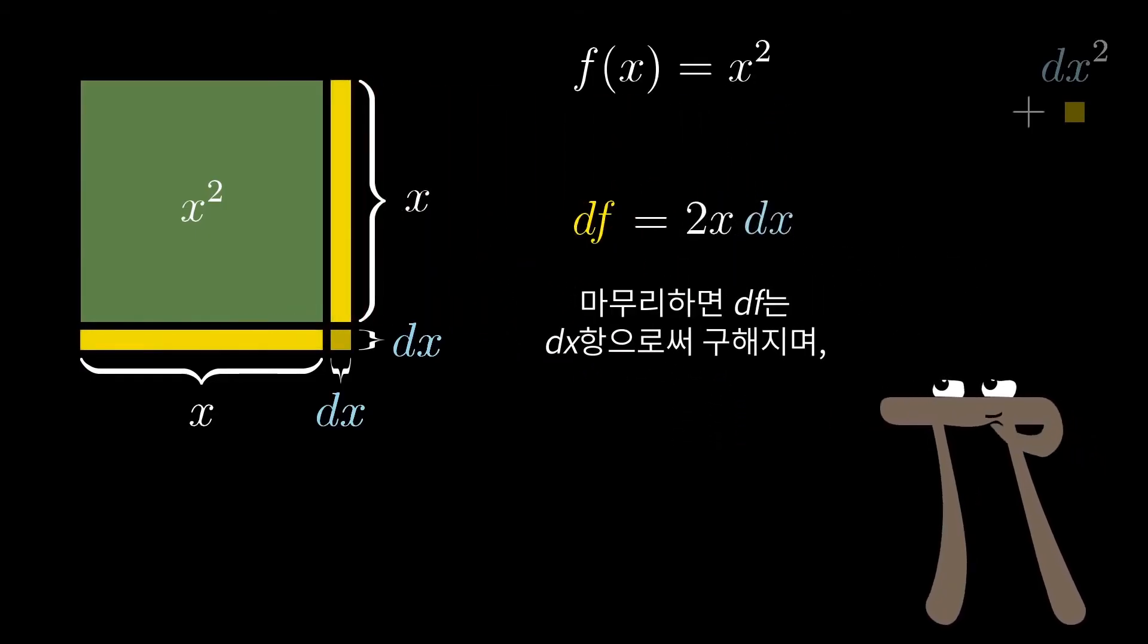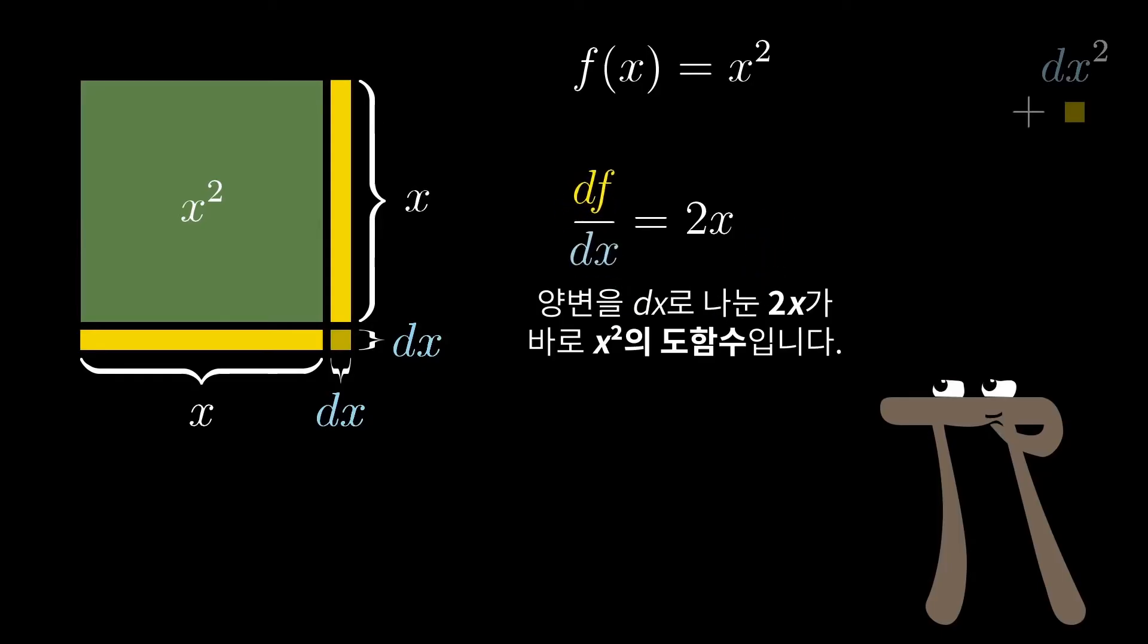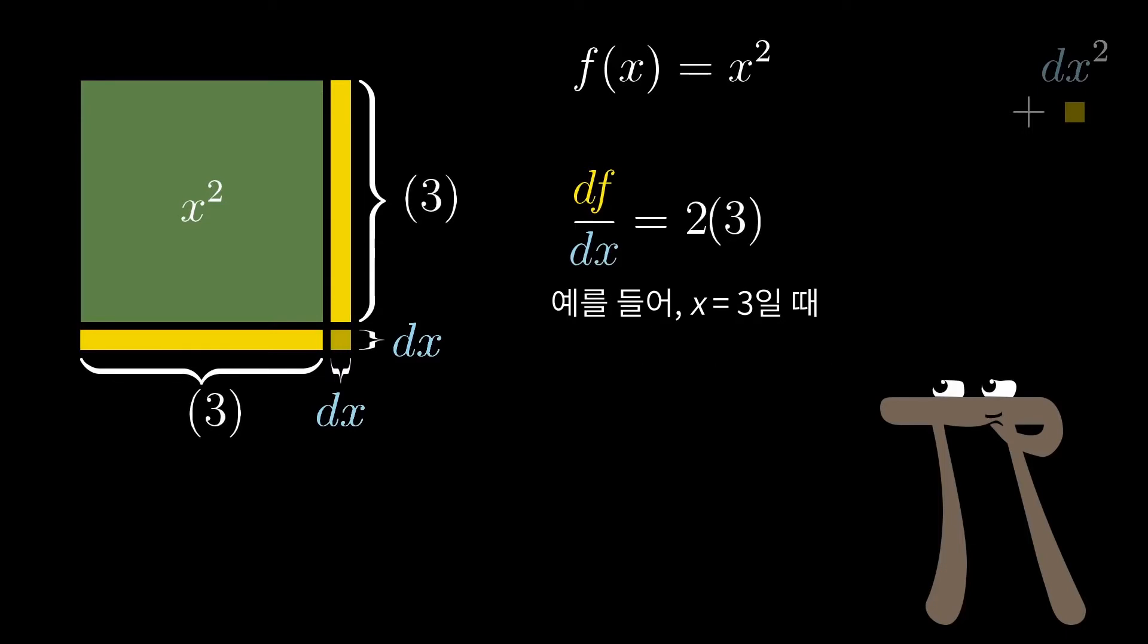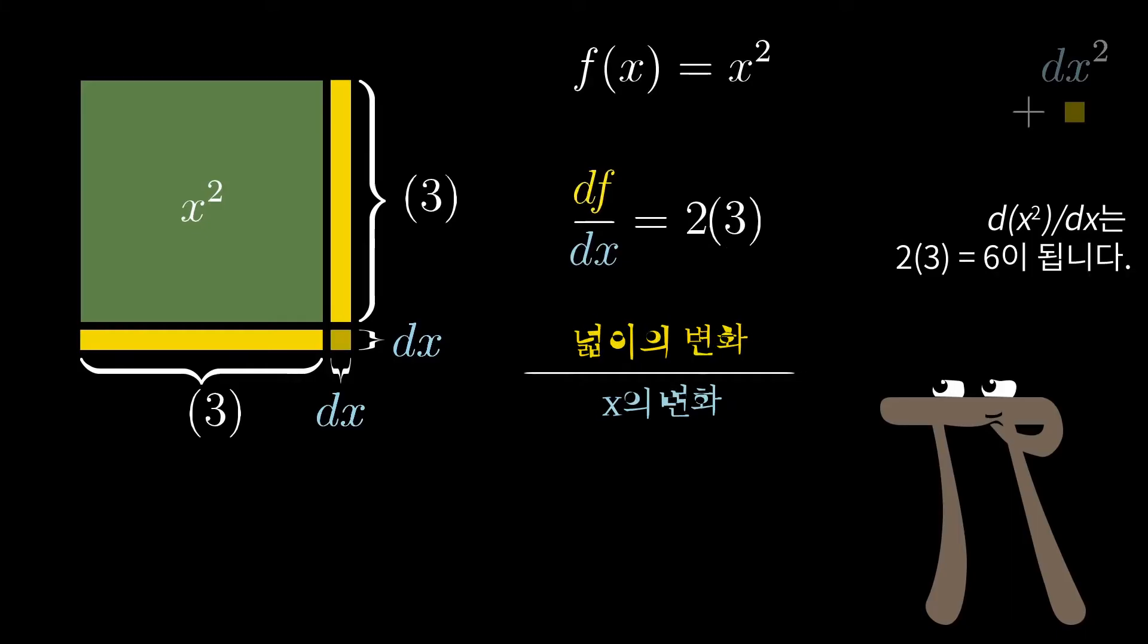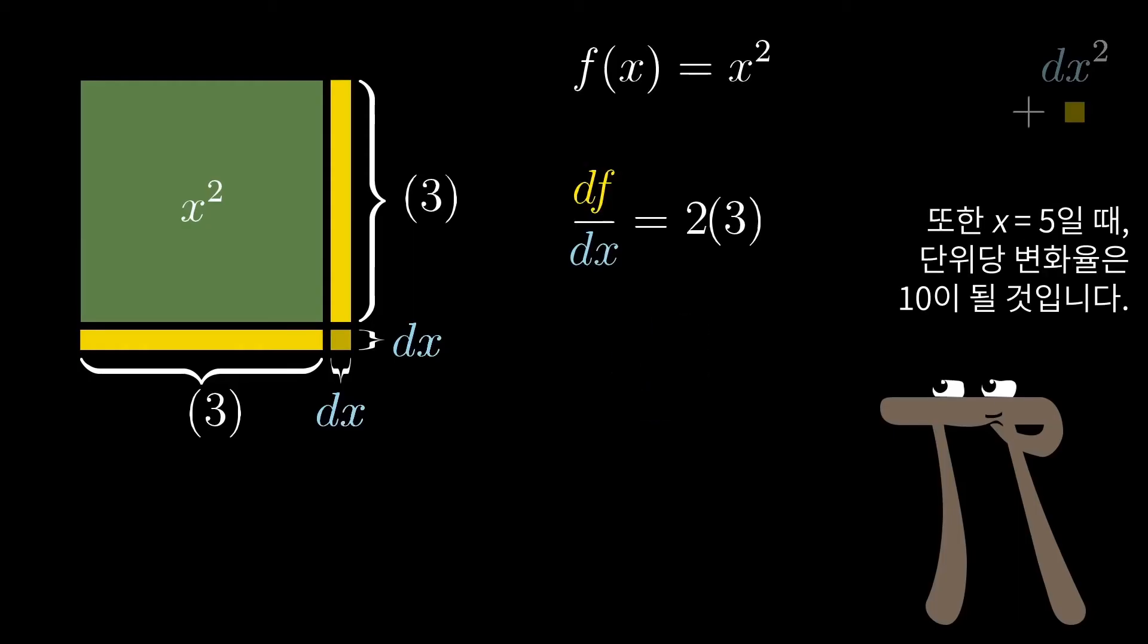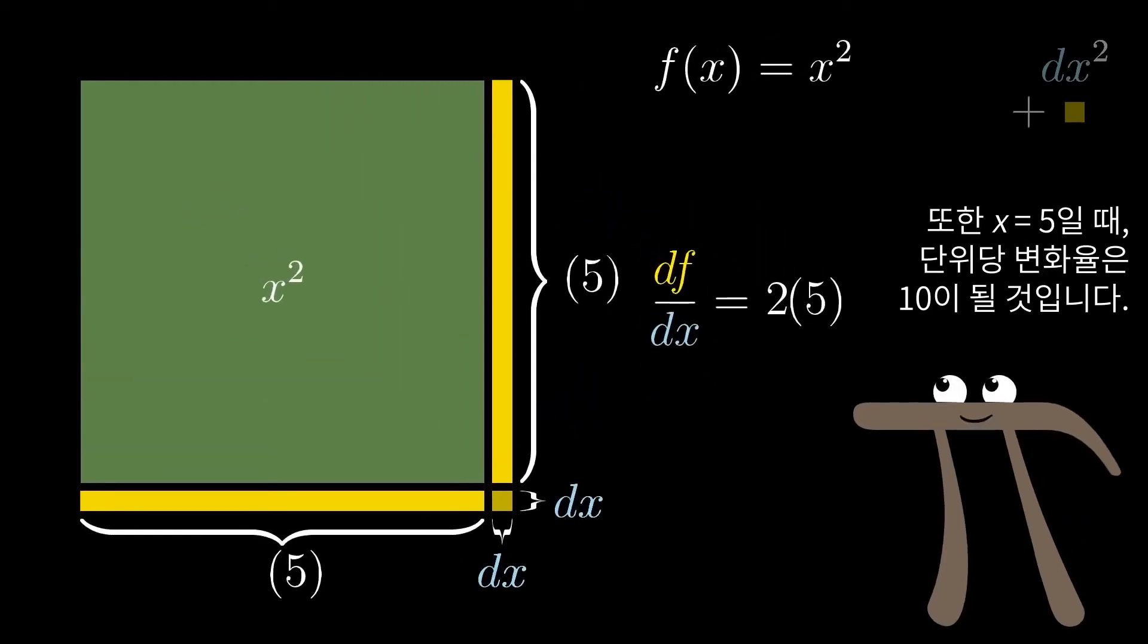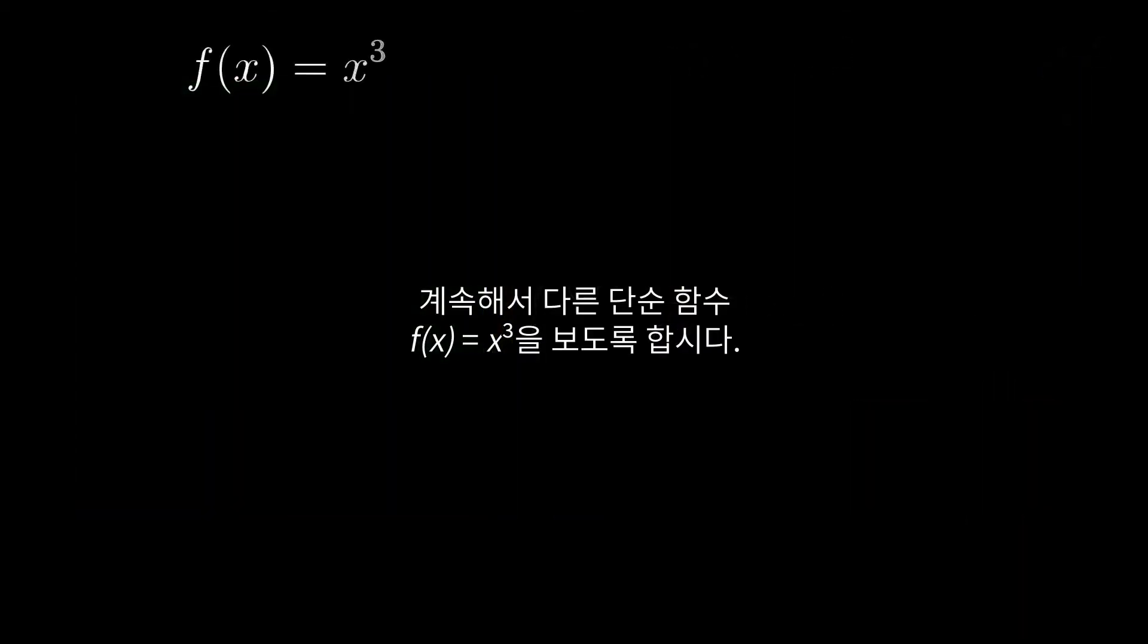What this leaves us with is that df is just some multiple of dx, and that multiple, 2x, which you could also write as df divided by dx, is the derivative of x squared. For example, if you were starting at x equals 3, then as you slightly increase x, the rate of change in the area per unit change in length added, dx squared over dx, would be 2 times 3, or 6. And if instead you were starting at x equals 5, then the rate of change would be 10 units of area per unit change in x.